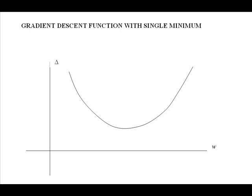In this example, there is just one minimum — a value for the weights for which there is a minimum difference between the required output and the input.